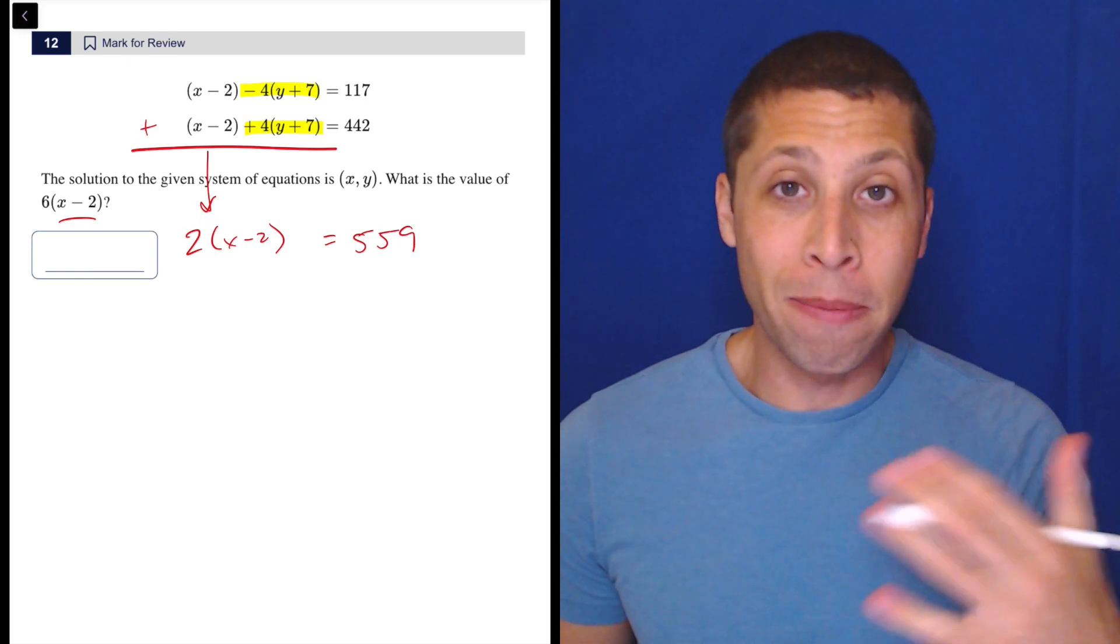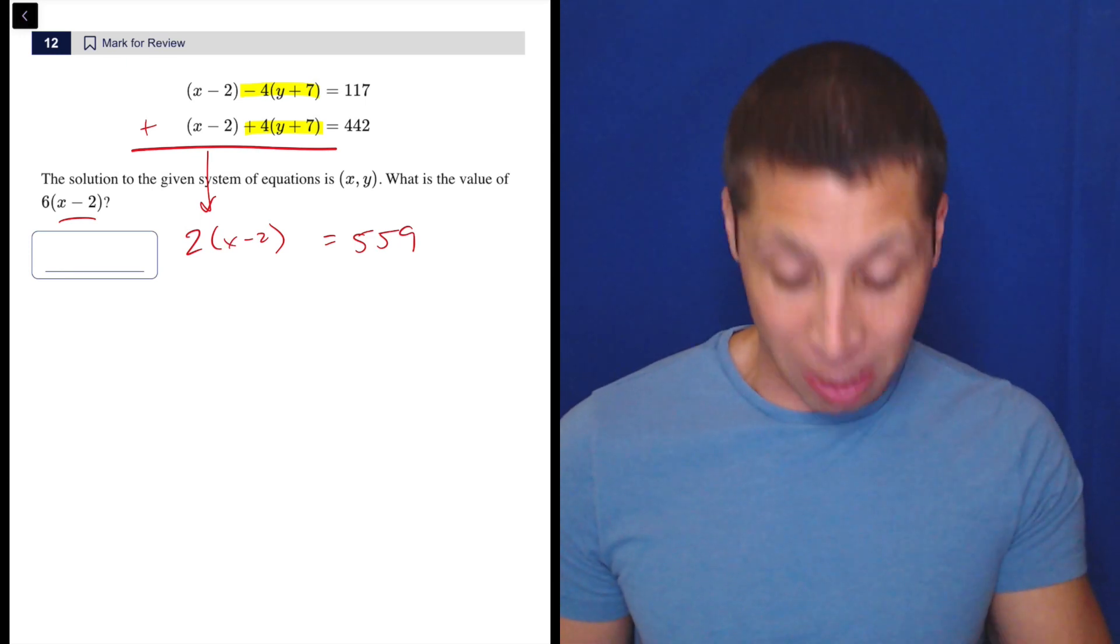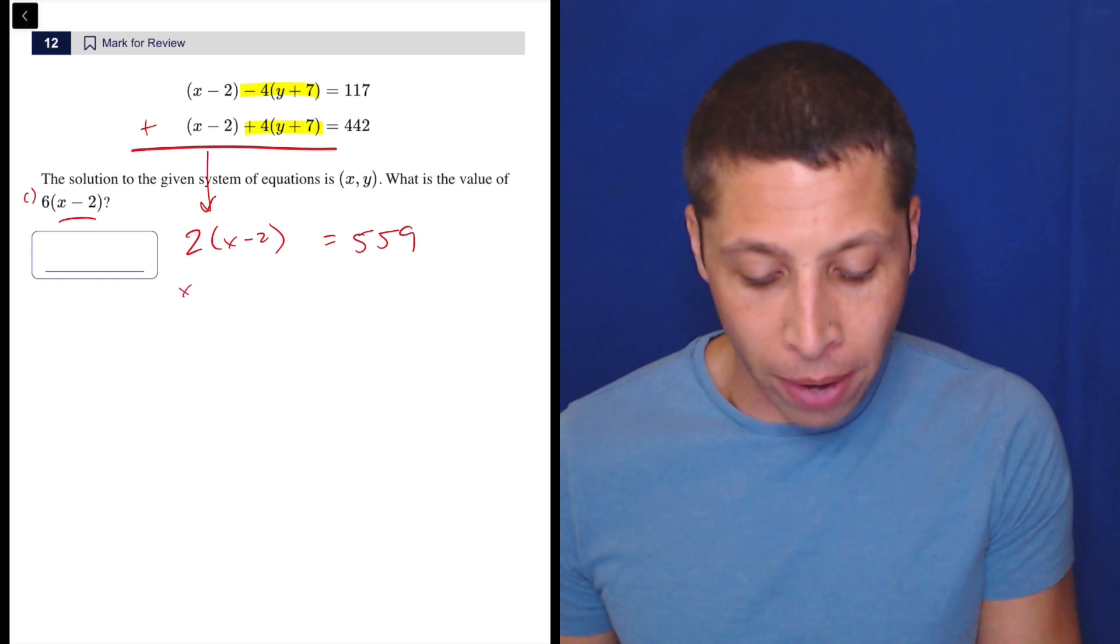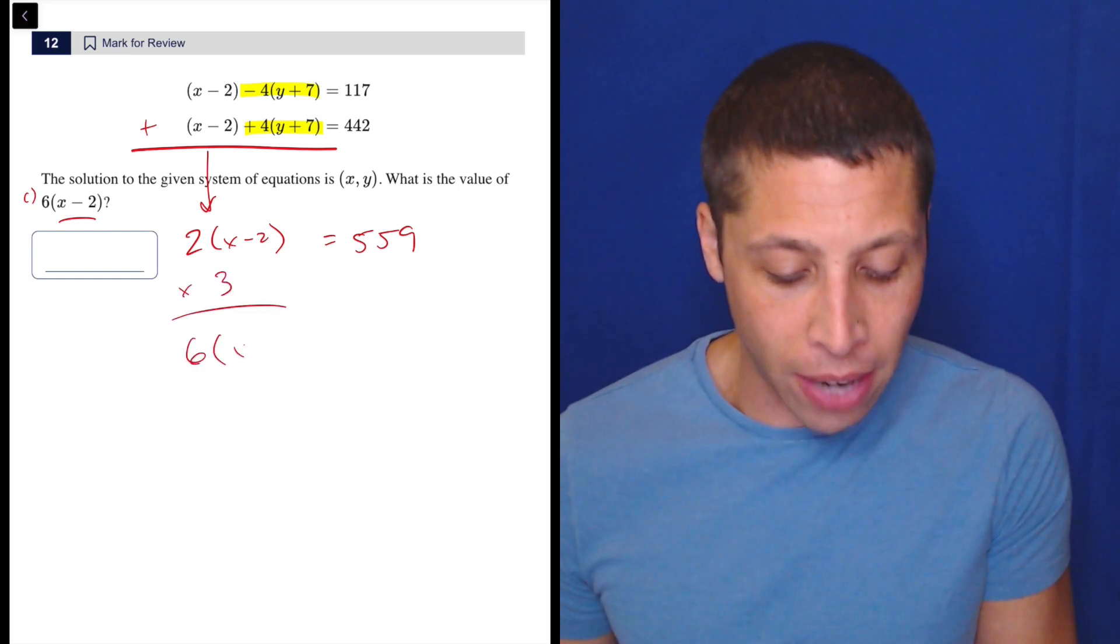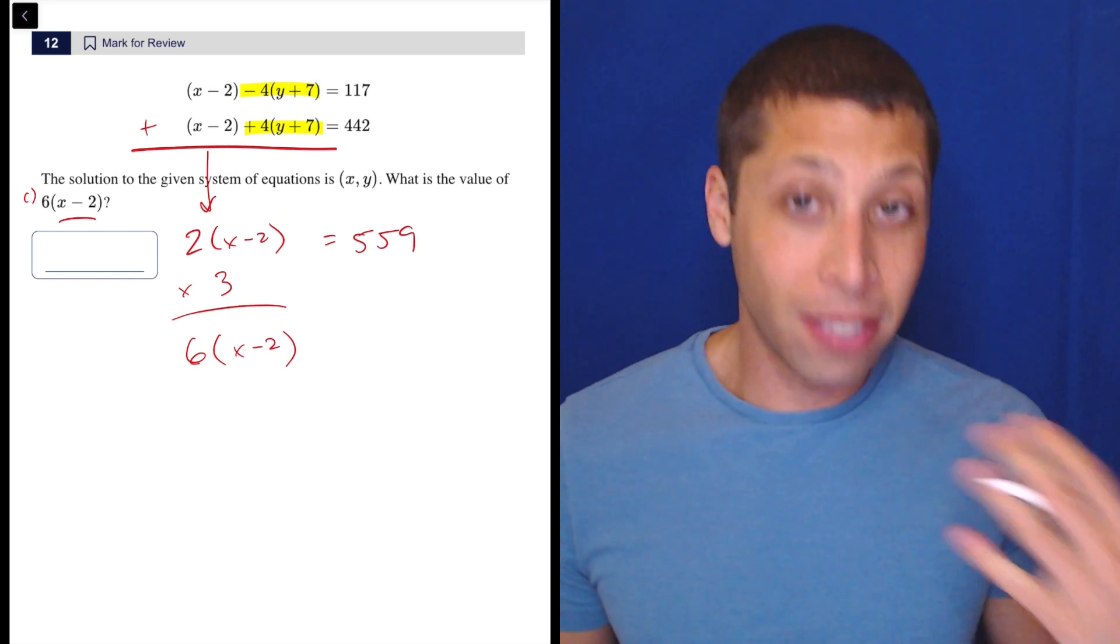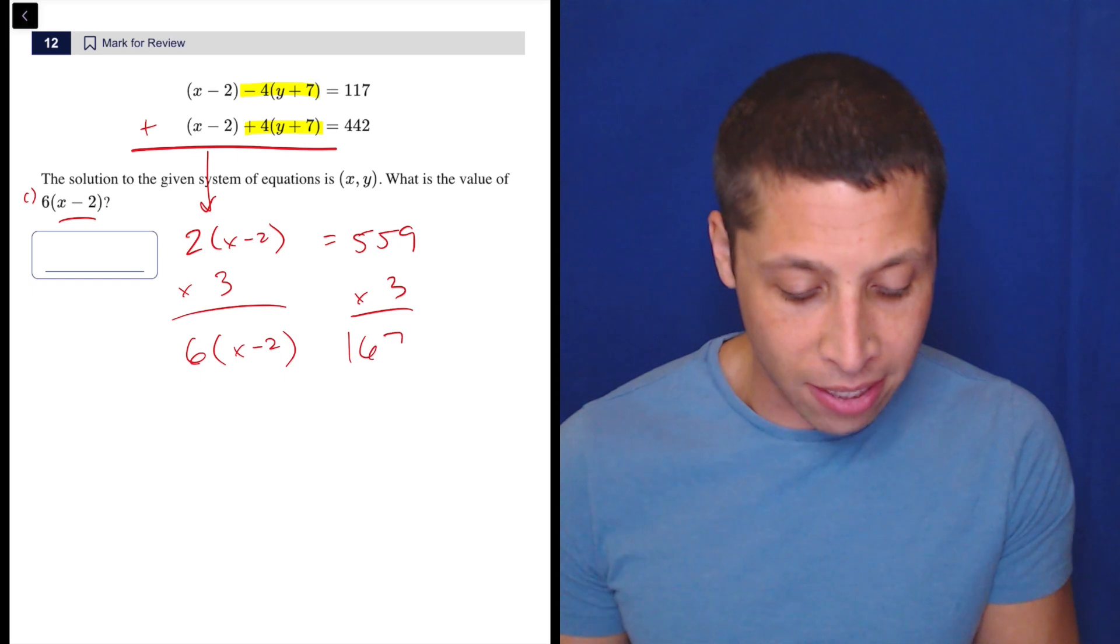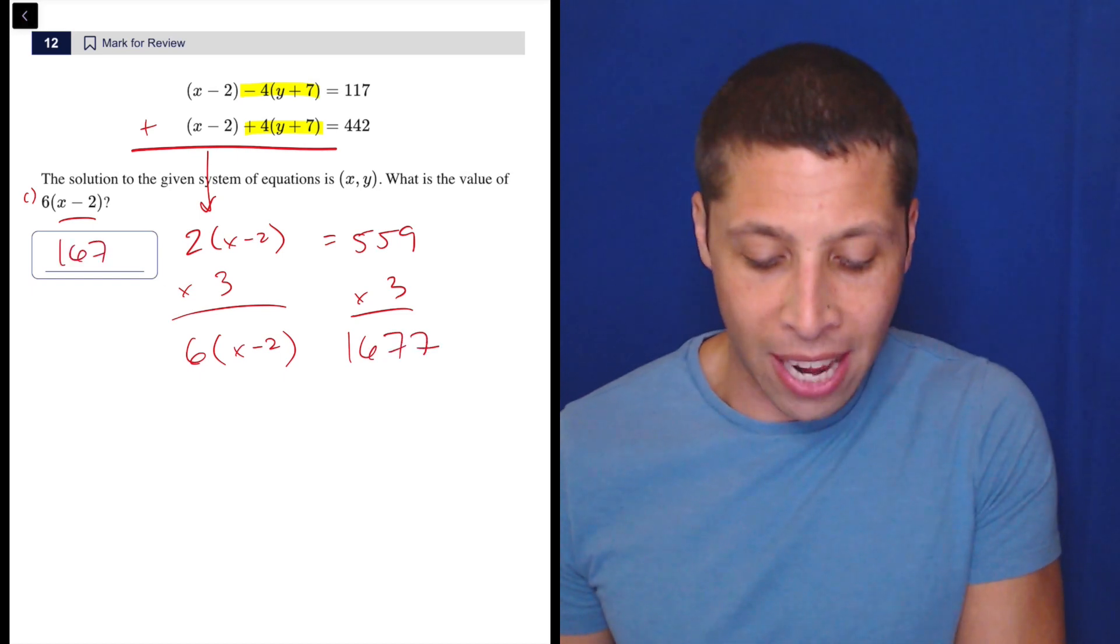Now, we went from point A to point B. How do we get to point C, which is this part here? Well, we would multiply by 3. If we multiplied by 3, we'd have not two (x - 2)s, but 6 of them. So if we do the same thing to the other side, 559 times 3 is 1677, which is the answer.